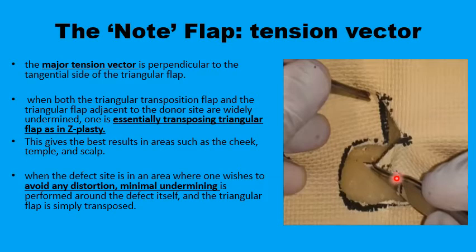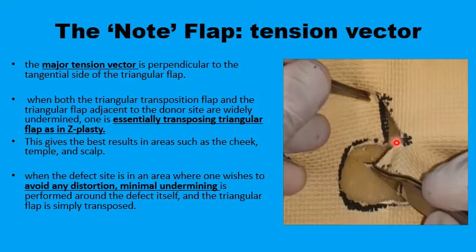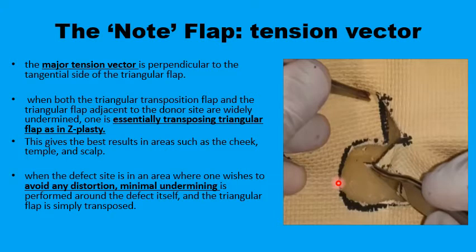The major tension vector is at the base of the donor site, and this is where you place your first suture. Once this is sutured, it is not difficult to close up the donor site primarily. You can then place the tip of the flap anywhere around the circumference of the circular defect to give the best possible results.